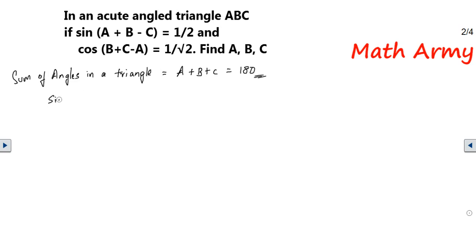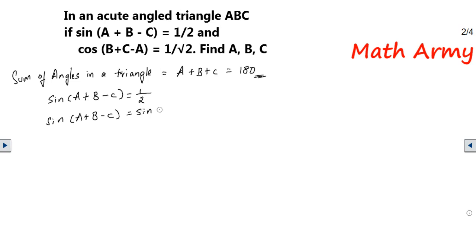Now let us get into the problem. What they have given: sine(A+B-C) = 1/2. What is the value of 1/2 in terms of sine? It's sine 30°. So instead of 1/2, write sine 30°. You can strike off sine on both sides, and what you are left with is A + B - C = 30°. This is going to be my equation number 1.